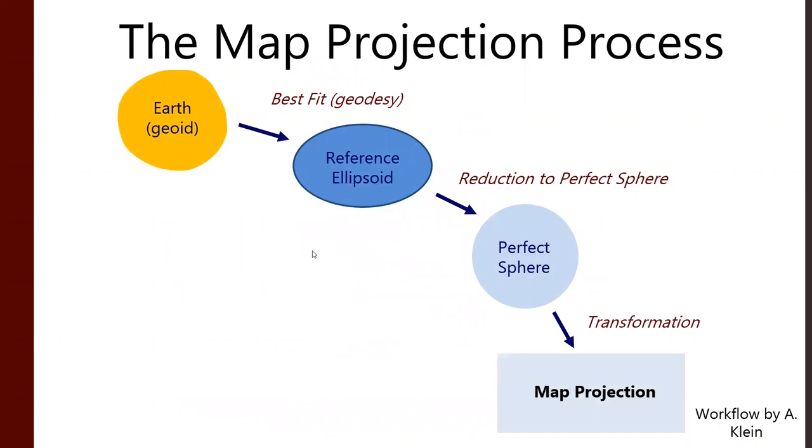So, this whole map projection process, we started with the geoid. The earth is a lumpy space potato. Check. We use some kind of mathematical best fit to turn it into a reference ellipsoid. Check. That reference ellipsoid is paired with other surveyed information, our usage. All of these different components go into making that.